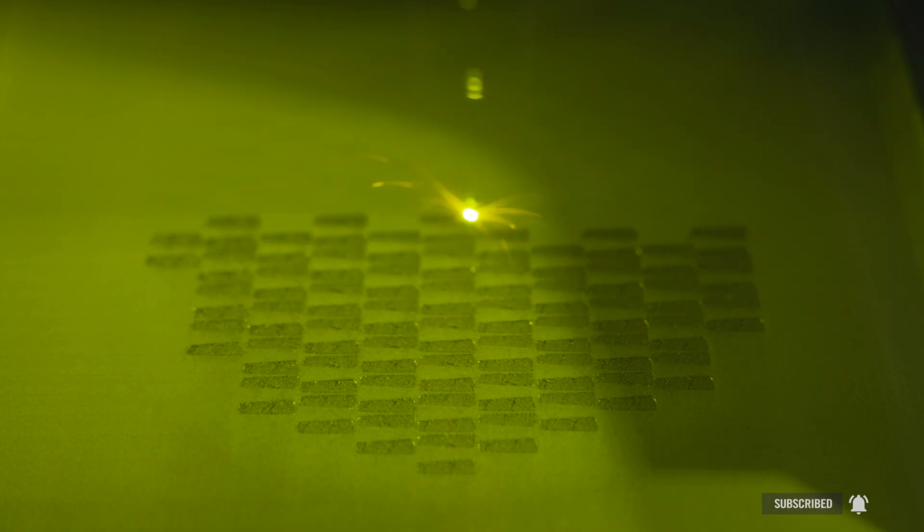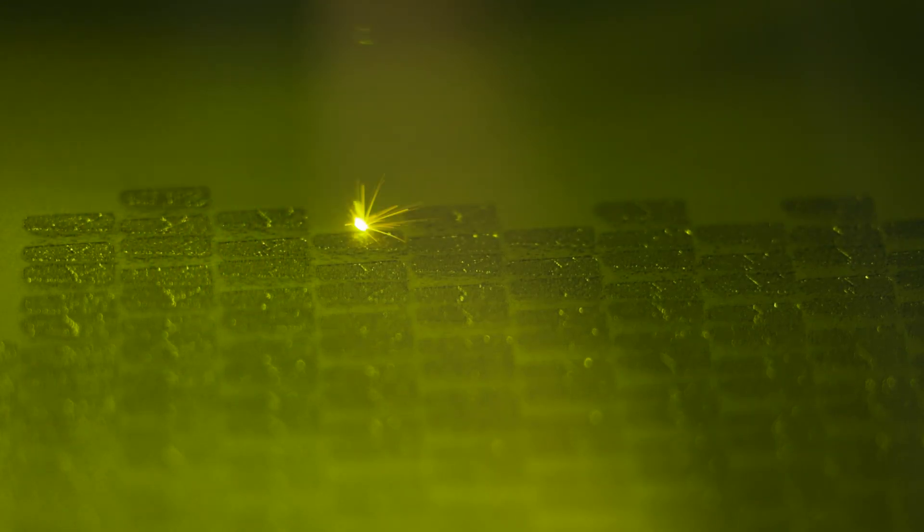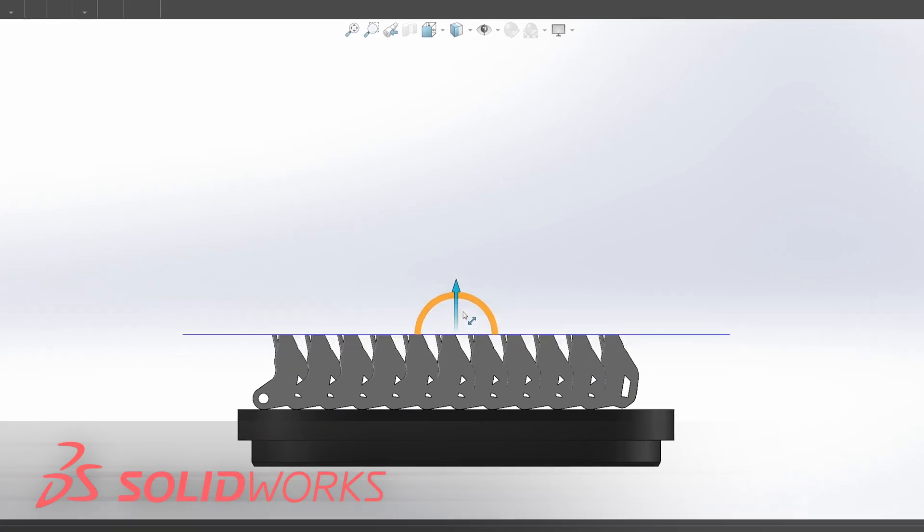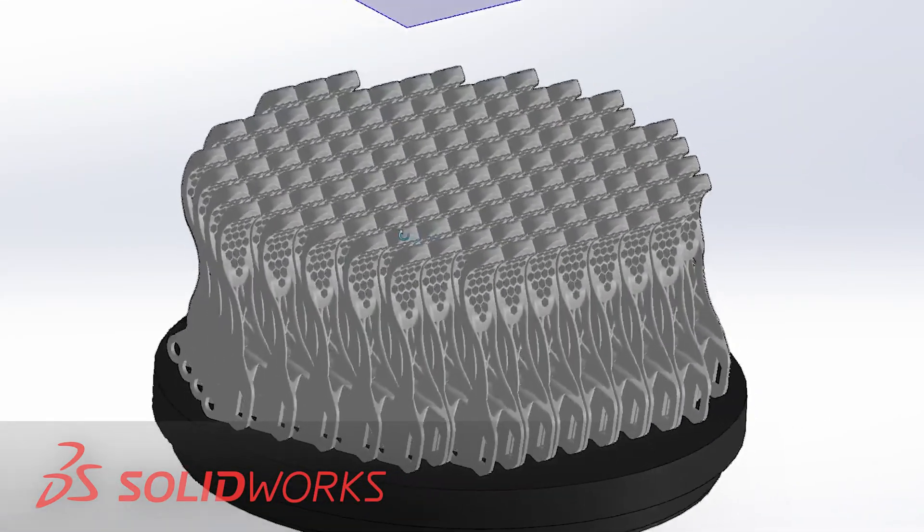This is a brake lever for a high-end mountain bike, and it was designed in SOLIDWORKS. The nice thing about printing this part vertically is it gives us the ability to stack up a ton of these parts on one build plate. It's a much more efficient way of going about manufacturing these parts.